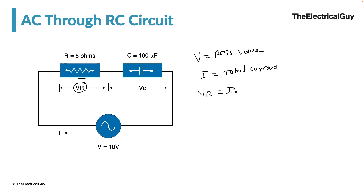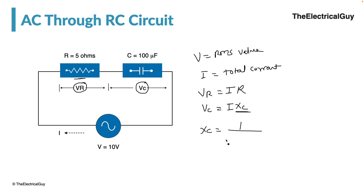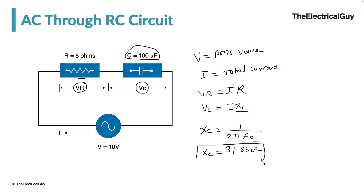VR is given by current times the resistance. Similarly, there will be a voltage drop across the capacitance, represented by VC, and it is given by current times the capacitive reactance XC. XC equals 1 divided by 2πFC, where F is the frequency and C is the capacitance, which is 100 microfarads. Putting values into this equation gives us XC equal to 31.83 ohms — just like resistance, XC is also measured in ohms.